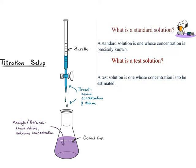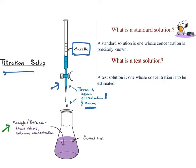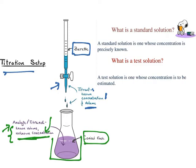Look at this — this is what a general titration setup is. You have a burette wherein the titrant is placed. We know the concentration of the titrant and the volume added, and you figure out how many ml is required to neutralize the analyte. The analyte is in the conical flask — you know the volume, but the concentration is not known; that is what has to be determined.